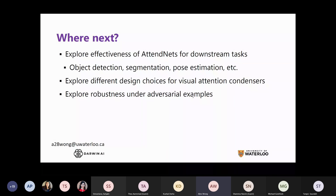We aim to explore effectiveness of AttendNets for different downstream tasks such as object detection, segmentation, and pose estimation. We also want to look at different design choices for the visual attention condenser itself, and explore whether self-attention might improve robustness against adversarial examples.